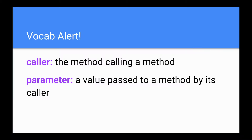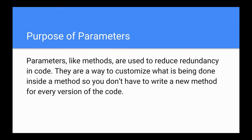Parameters. In vocab, the caller is the method calling a method — the one who is actually using the method. A parameter is a value passed to a method by its caller. The purpose of parameters: like methods, they are used to reduce redundancy in code. They're a way to customize what's being done inside a method so you don't have to write a new method for every version of the code.